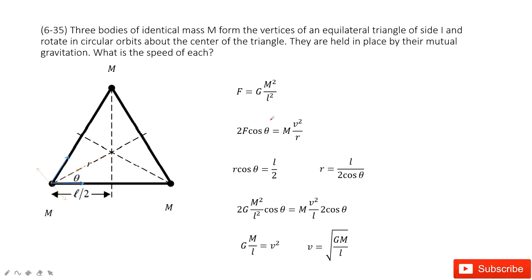In this one, we have three identical masses m which are located at points that construct an equilateral triangle. Each side is equal. The center is there, and we need to find the speed for each one.